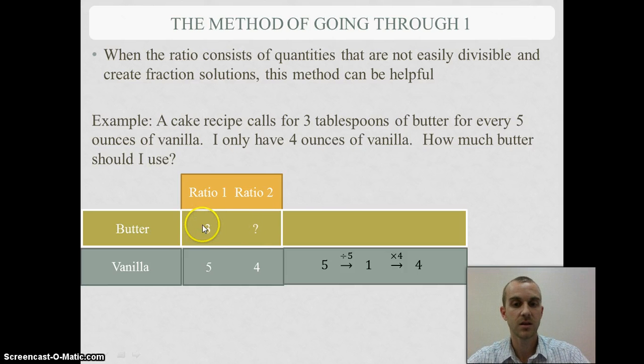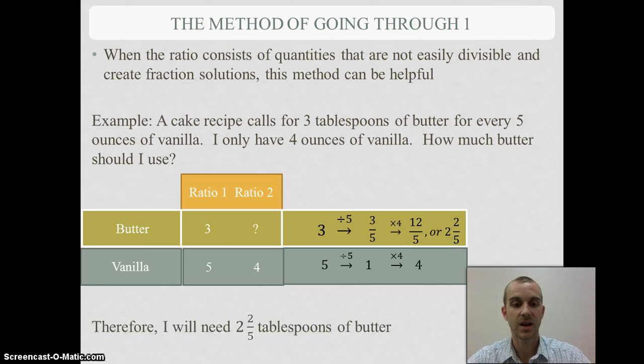I take 3 and divide by 5, that gives me 3 fifths. Now I'm going to take 3 fifths, multiply by 4 because that's what I did in my second part. That gives me 12 fifths, which can be simplified as a mixed number as 2 and 2 fifths. So what I need then is 2 and 2 fifths tablespoons of butter.